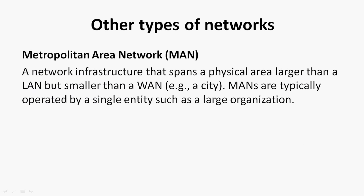Now we will see other types of networks. First of all we will see MAN, that is a metropolitan area network — a network infrastructure that spans a physical area larger than a LAN but smaller than a WAN, for example a city.